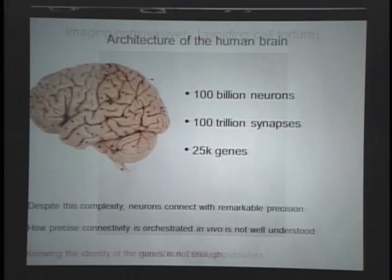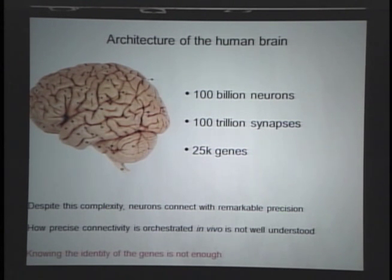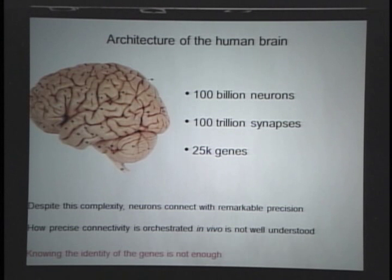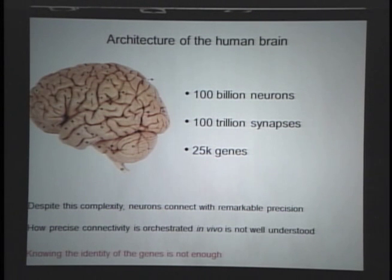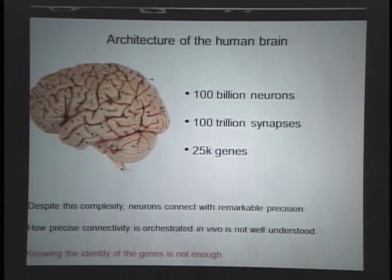Now I want to switch gears and motivate the importance of this from a biological perspective. Another goal of my lab, besides improving microscopy, is to better understand neurodevelopment in the brain. The human brain is a fantastically complicated organ — billions of neurons, orders of magnitude more synapses — and despite this large number of parts, it somehow manages to wire correctly. How this precise connectivity happens in vivo is still not well understood. This complexity is coded for by about 25,000 gene products, even though there are trillions of functional parts.